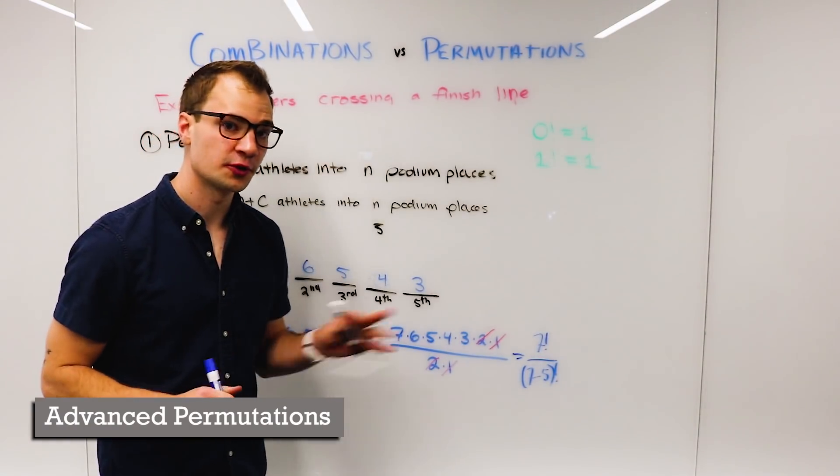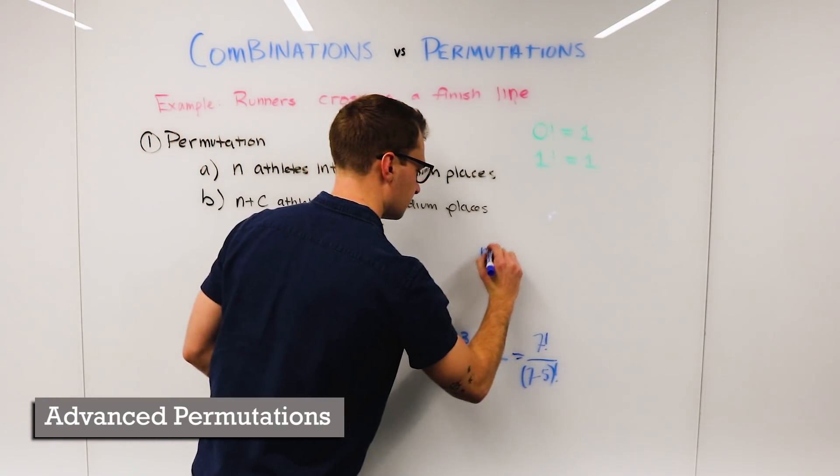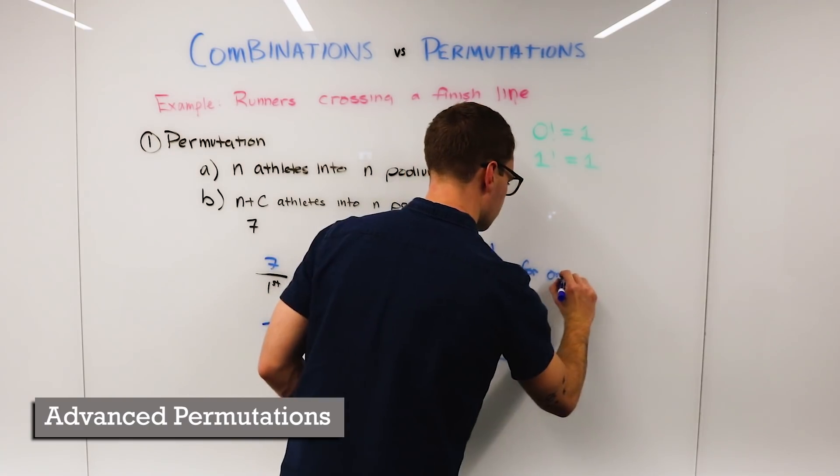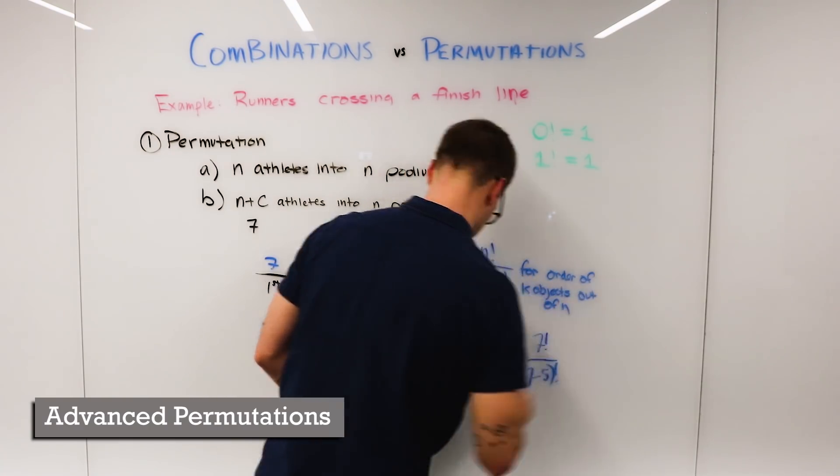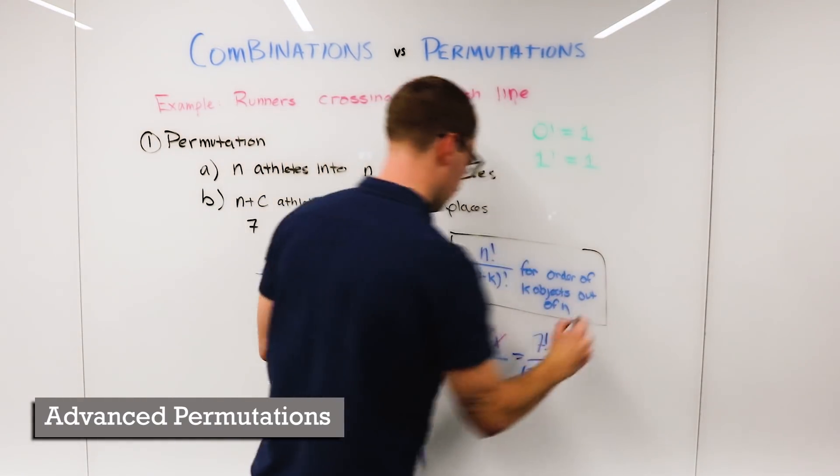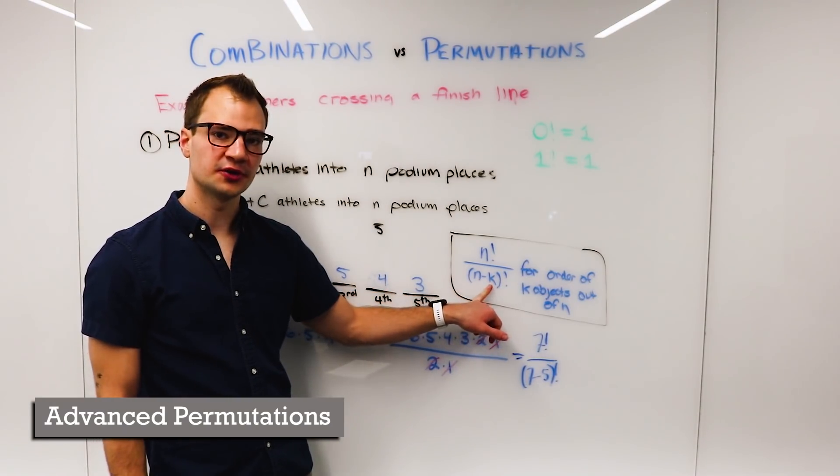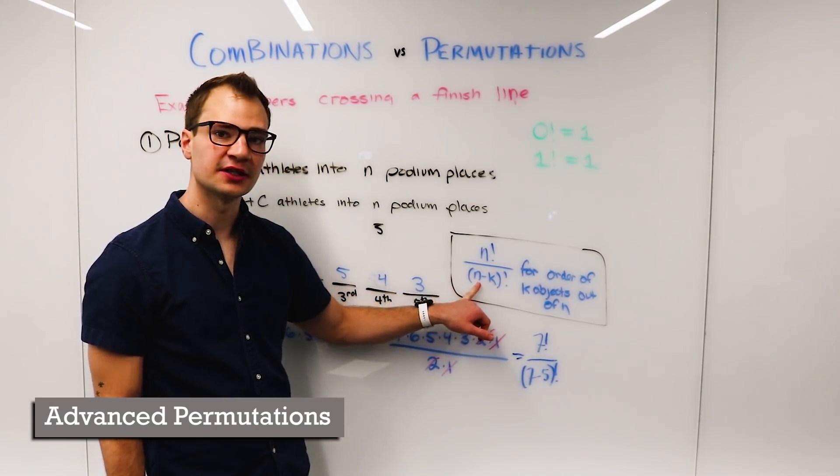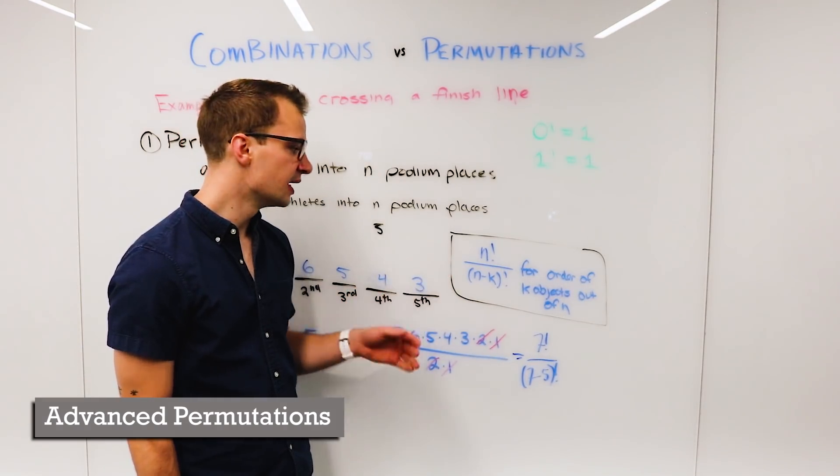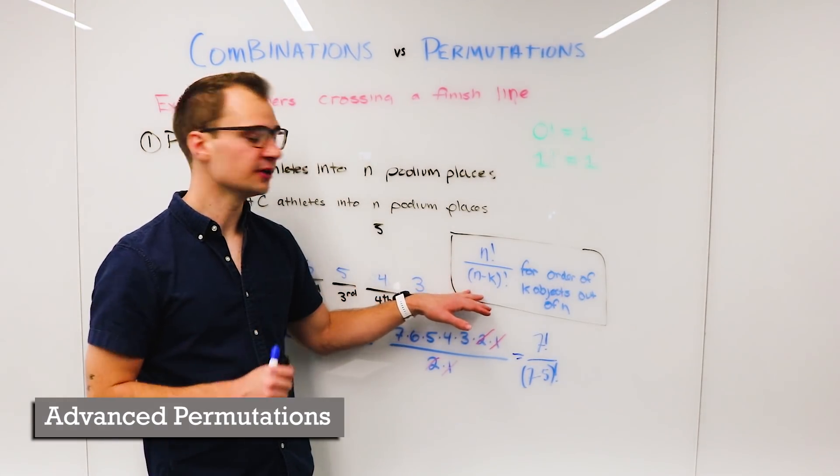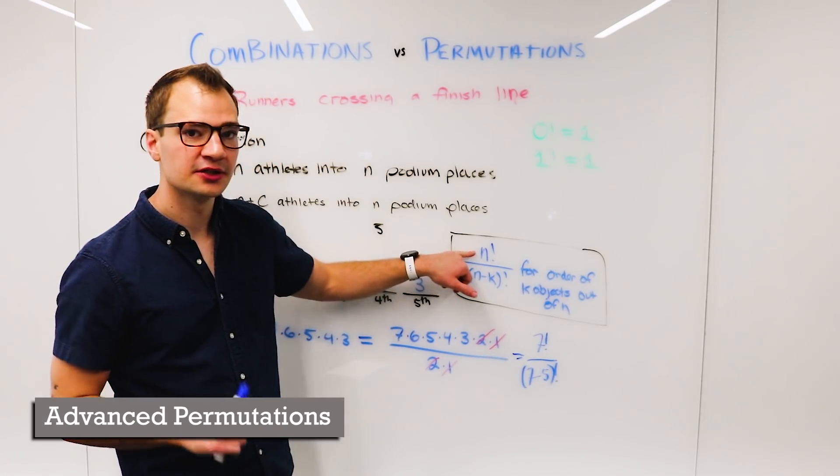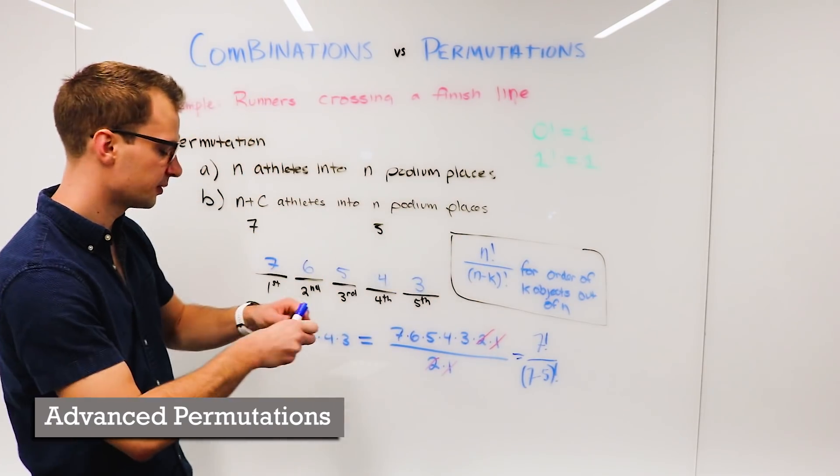So our general formula for this: if we care about the five podium places out of seven athletes, we're going to use this formula here. And all you need to remember is that it's our generic permutation formula that we wrote up here.